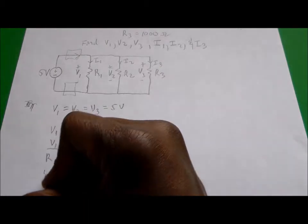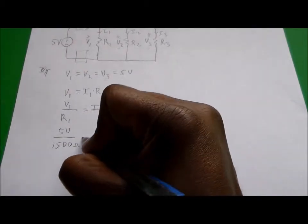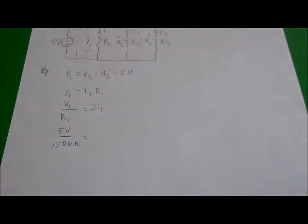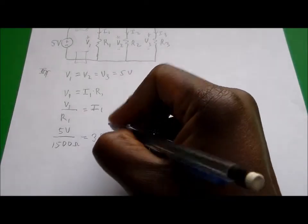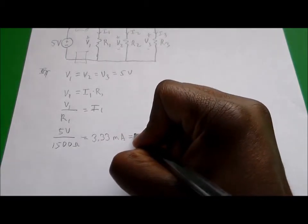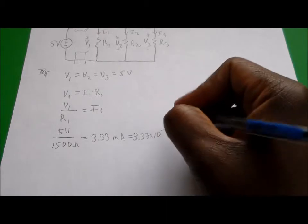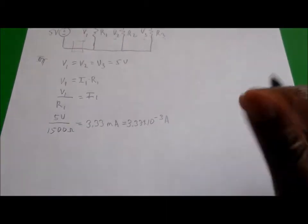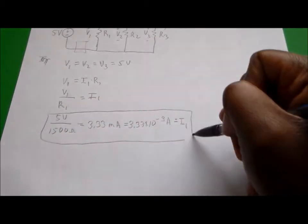If we take that 5 volts and divide it by the resistor value 1500 ohms, that's 5 divided by 1500. That gives us an answer of 3.33 milliamps, or the same thing as 3.33 times 10 to the minus 3 amps. That's the current going through resistor number one.